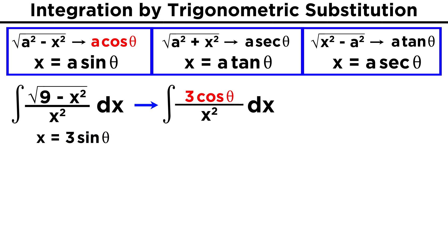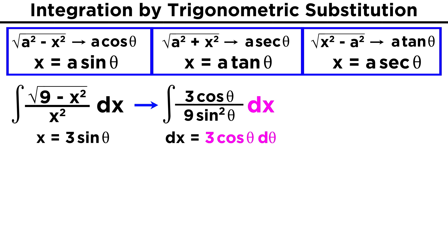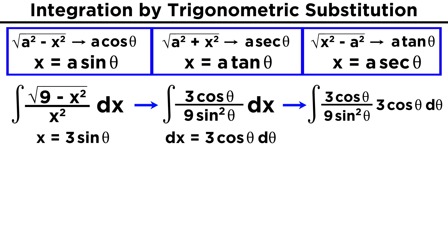That means x must specifically be substituted with three sine theta, and by the steps we already discussed, this whole term will become three cosine theta. But that's not the only x in the integrand. This x squared term in the denominator will become three sine theta quantity squared, or nine sine squared theta. Now here's the next thing we must keep in mind: this integral was in terms of x, so there is still a dx here, but if we changed everything to be in terms of theta, then this must become d theta. So what is dx in terms of theta? Well if x is three sine theta, then dx over d theta must be its derivative with respect to theta. The derivative of three sine theta is three cosine theta, and that allows us to change dx into three cosine theta d theta.